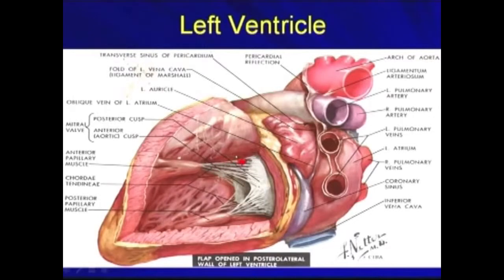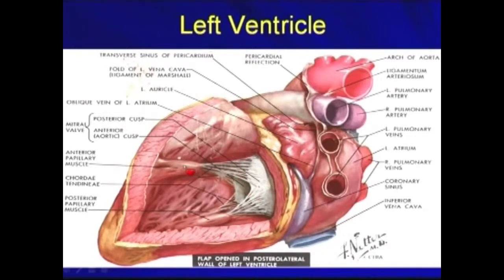Here is the left ventricle. Blood drains from the left atrium to the left ventricle through the mitral valve. Here are the posterior cusp and anterior cusp of the mitral valve, with the papillary muscle and the chordae tendineae.